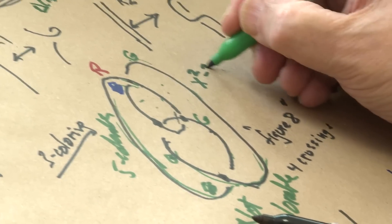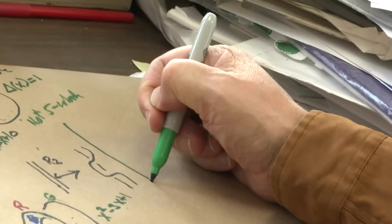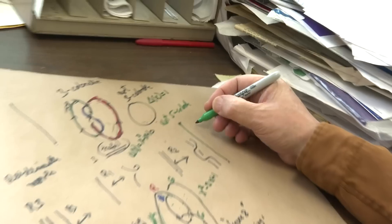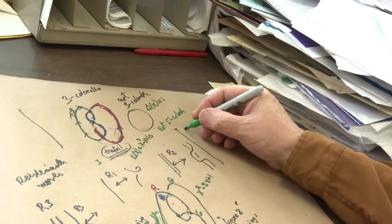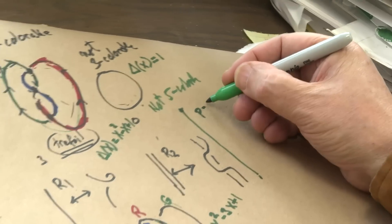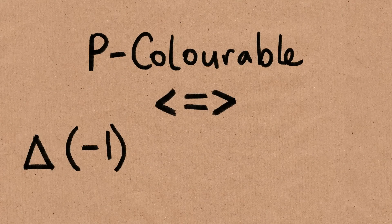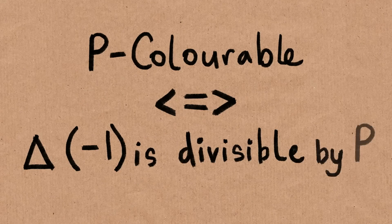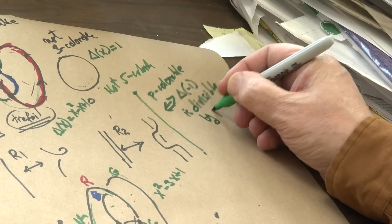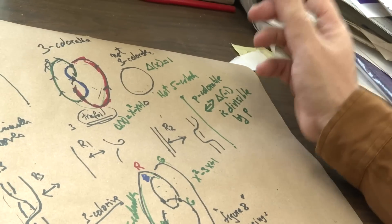And the polynomial for this one is x squared minus 3x plus 1. An amazing theorem — not so hard, but still amazing — is that a knot is p-colorable, where p is a prime like 3 or 5, if and only if the Alexander polynomial evaluated at x equals minus 1 is divisible by p.